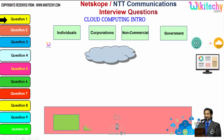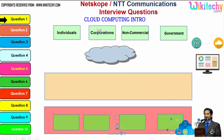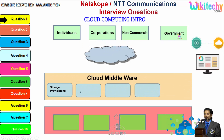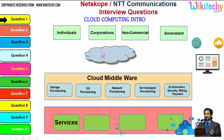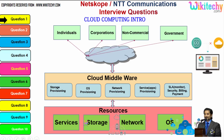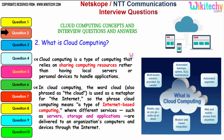There are different types of users: individuals, corporations, non-commercial people, and government. From any of these users, they are able to access services, storage, network, or operating systems via the cloud middleware — specialized software given by the cloud service provider to access the resources. This is how the cloud computing architecture works.